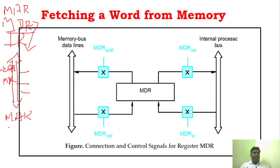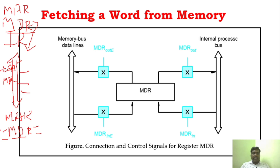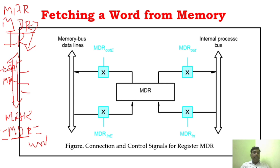The MDR — memory data register — has two inputs and two outputs. The processor gets information from the external bus during a read cycle. After performing an operation like addition, the processor also has to store the result back in memory — that is done through MDR and is called the write cycle. That is why MDR is capable of receiving and sending information from both buses, which is why it has two inputs and two outputs.